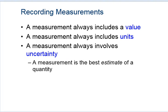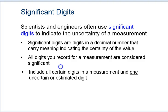Our tools are not infinitely precise, so a measurement is going to be our best estimate of a value. Keep that in mind. And significant digits are something that scientists and engineers use to indicate the uncertainty of a measurement.